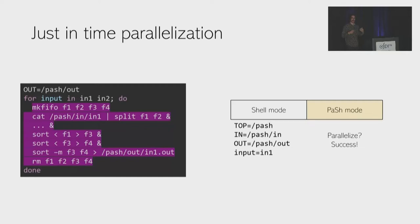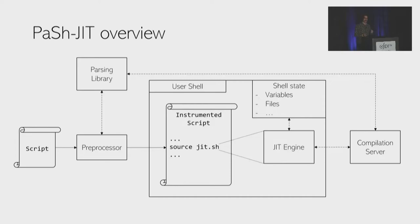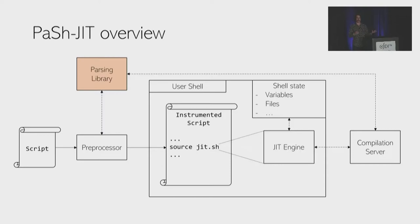Let me give an overview of PaSh's architecture. An important goal is that PaSh should not be tightly coupled to a specific shell. PaSh uses a preprocessor that replaces all potentially parallelizable regions — this doesn't need to be precise since at runtime we determine whether we can actually parallelize. We've re-implemented a parsing library to parse and unparse scripts, used by both the preprocessor and the compilation server. Then there's the JIT engine and the compiler, all executed transparently on the user's shell.